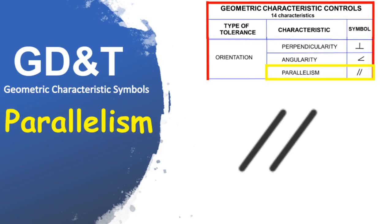Parallelism is a parallel orientation of one referenced feature to a datum surface or line. It can be a 2D line referenced to another 2D line or datum, or one surface plane parallel to another datum plane. Parallelism can control surface parallelism between two surfaces or features, and axis parallelism that controls how parallel an axis needs to be to a datum plane or axis. Parallelism does not control the angle of the referenced feature but only creates an envelope in which the feature must lie.